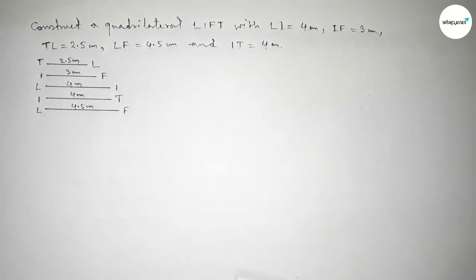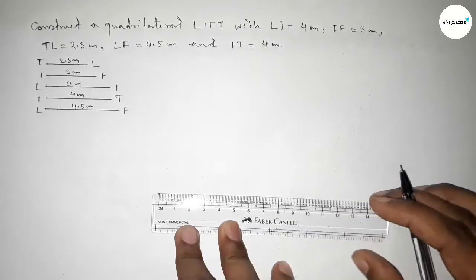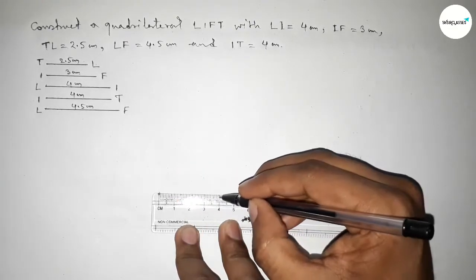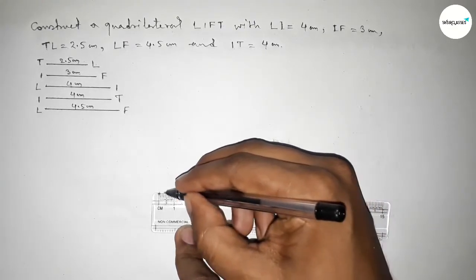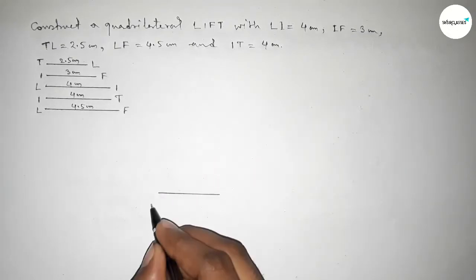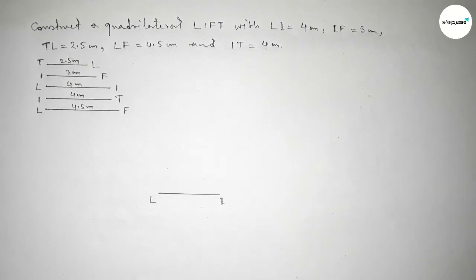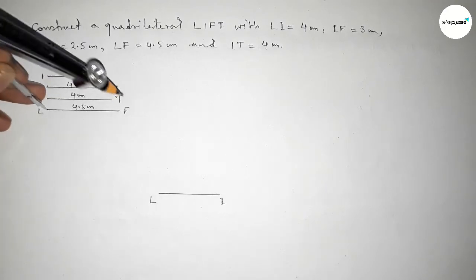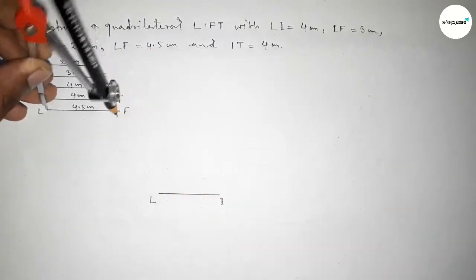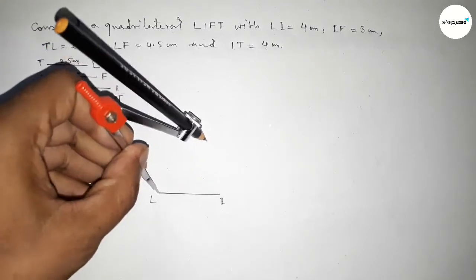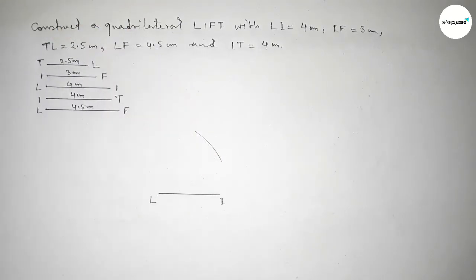Now first we have to draw here a line of length 4 centimeter. Drawing here a line 4 centimeter and taking here point L and here I. Next taking the length LF equal to 4.5 centimeter and putting the compass on the point L and drawing an arc.